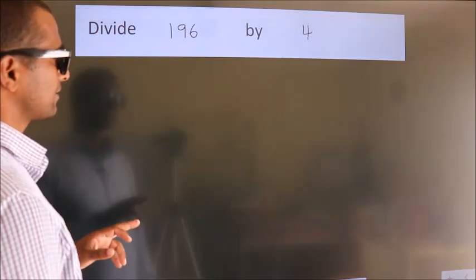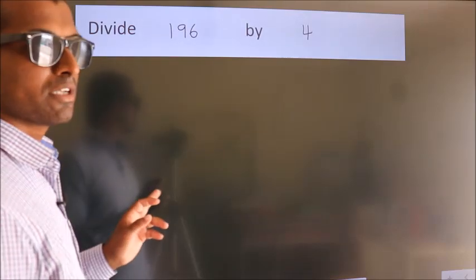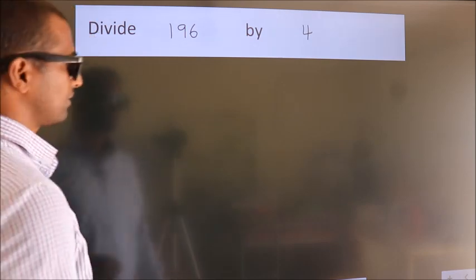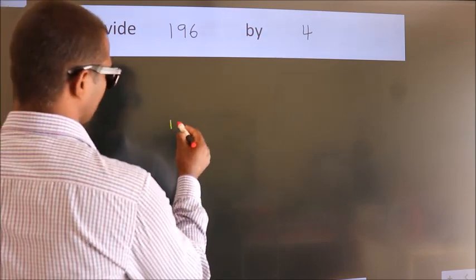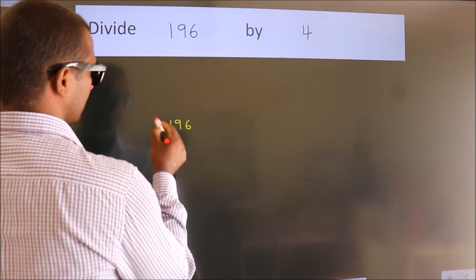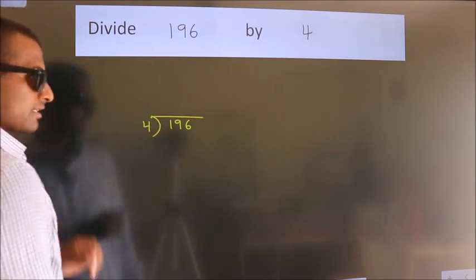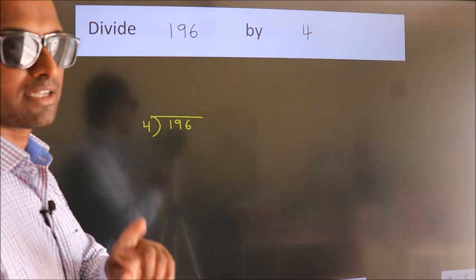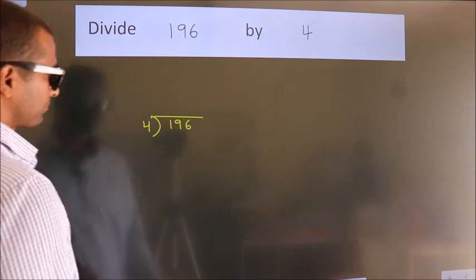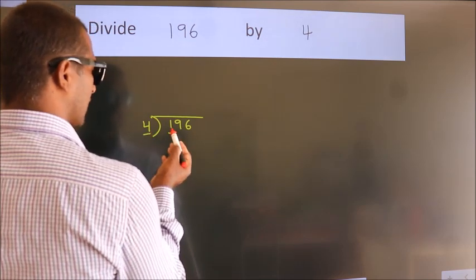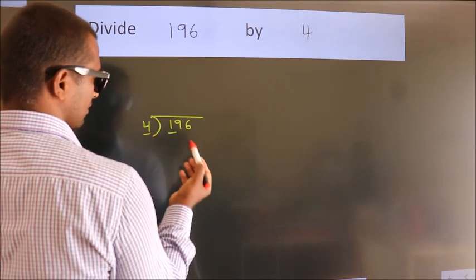Divide 196 by 4. To do this division we should frame it in this way: 196 here, 4 here. This is your step 1. Next, here we have 1. 1 is smaller than 4, so we should take 2 numbers: 19.